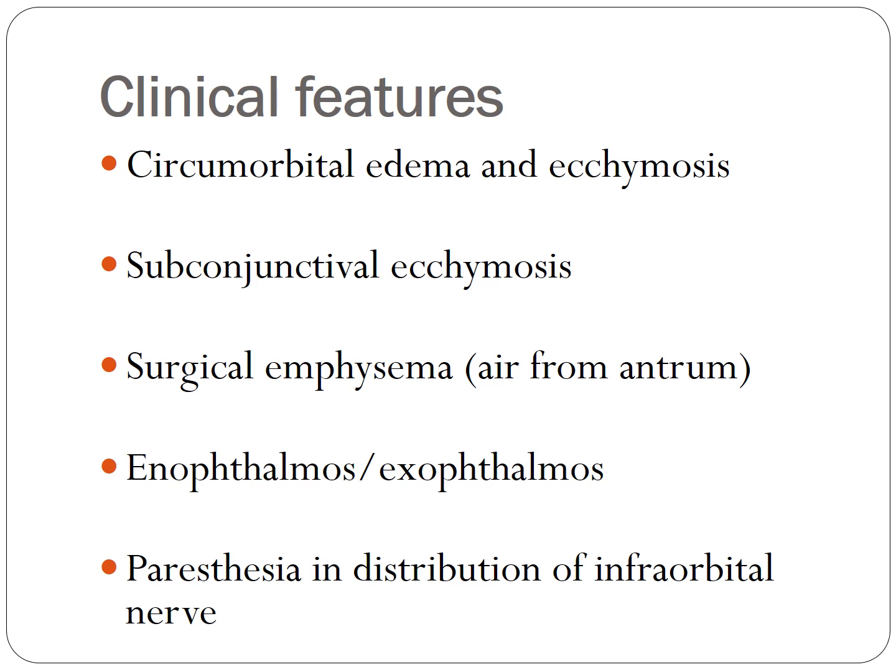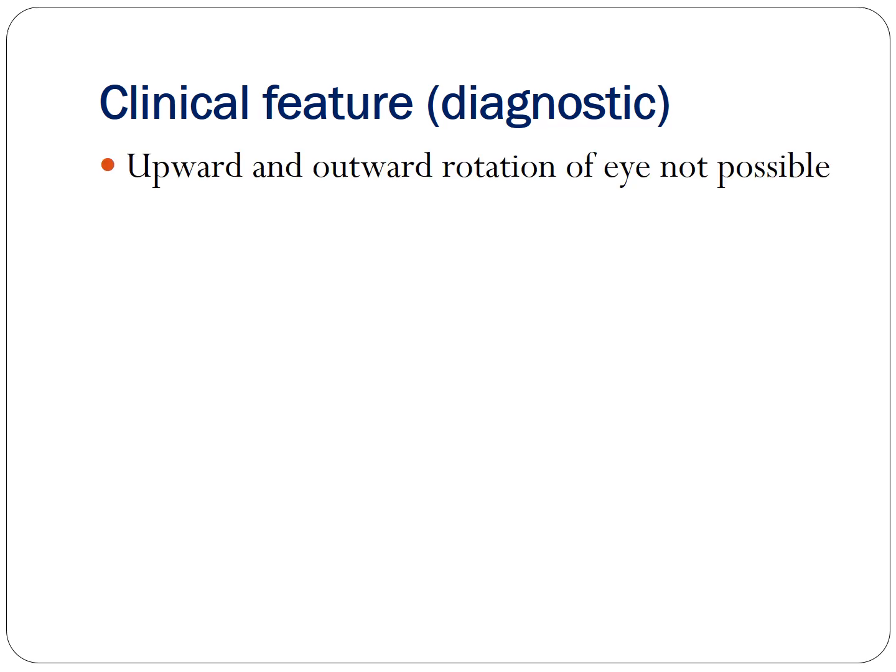If the fracture line extends from the floor of the orbit to the infraorbital rim, the infraorbital canal is damaged and the infraorbital nerve is affected, resulting in neuropraxia and paresthesia in the distribution of the infraorbital nerve. There are two important fracture patterns: a pure blowout fracture involves only the floor of the orbit, while an impure blowout fracture extends anteriorly to also involve the infraorbital rim.